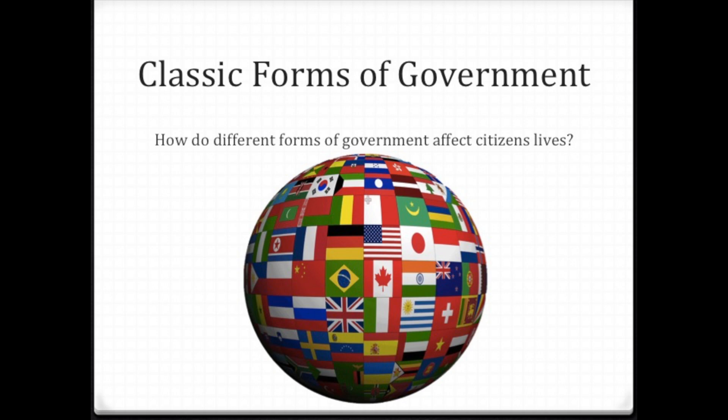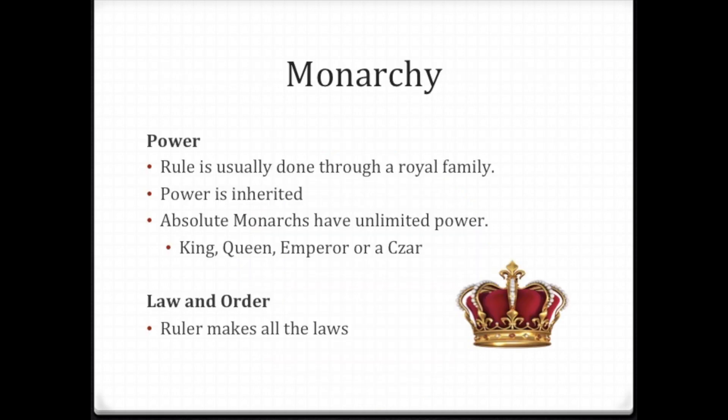There are many different forms of government. Some have one leader who has all the control; others give power to the people. The following are forms of government that exist or have existed around the world. Keep in mind how different forms of government affect the citizens that live there. Please use the worksheet I've attached to fill in the notes for today.